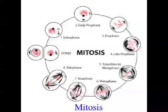After mitosis, cytokinesis occurs. The plasma membrane of the original parent cell pinches in the middle, and two new daughter cells are formed. So mitosis starts with one cell, and after prophase, metaphase, anaphase, and telophase, cytokinesis divides it into two genetically identical cells.